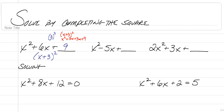You probably don't know why that's important yet, but once we start solving, you'll see why we want to do that. For this next example, you still have to take half no matter what it is. So in this case, we have 5. Half of 5 is 5 halves, squared would give us 25 fourths.